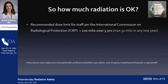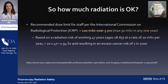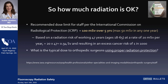How much radiation is okay? The International Commission on Radiologic Protection recommends 100 millisieverts over five years, or a max of 50 millisieverts in any one year. If you are wearing your radiation detector, you will be monitored and alerted if you exceed these levels. This is based on a radiation risk of working for 47 years starting at age 18, at a rate of 20 millisieverts per year, which is estimated to give an excess risk of cancer of 1 in 1,000. The typical dose to you using proper radiation protection is less than 2 millisieverts per year — but we don't know that any low dose is truly safe.